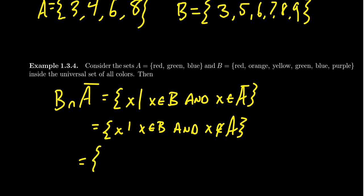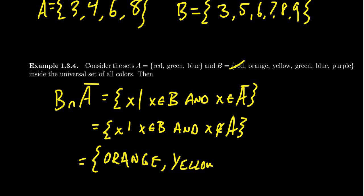Looking at B: red is in B but also in A, so we wouldn't include red. Orange is in B but not in A, so orange belongs to this set. Similarly for yellow — yellow is in B but not in A. Green is in A, so we won't consider it. Blue is also in A, but purple isn't. So we get all the colors in B but not in A. In this very special case, we're able to use a complement without an explicit universe and still do this calculation.